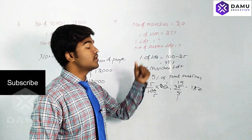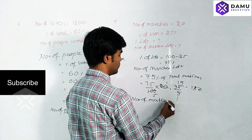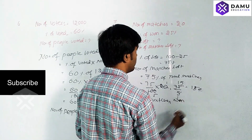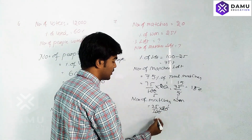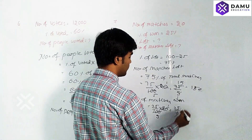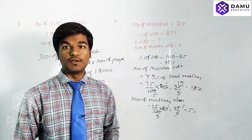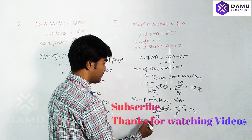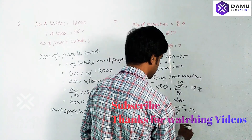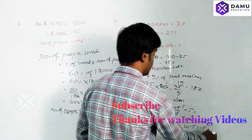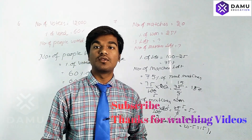There is another method. Number of matches won equals 25% of 20, which is 25 by 100 into 20 — that gives 5 matches won. Then number of matches lost equals total minus won, that is 20 minus 5 equals 15. Both methods give the answer 15. Thanks for watching this video.